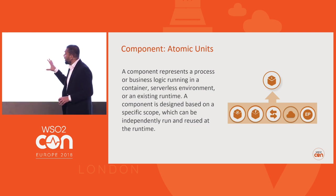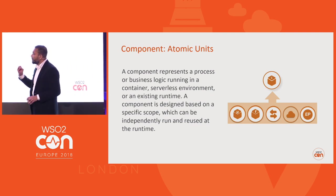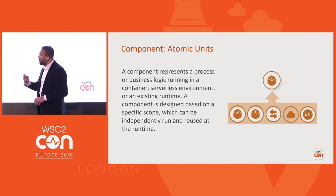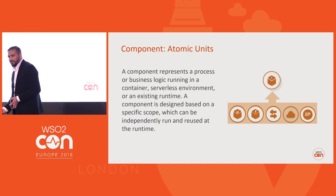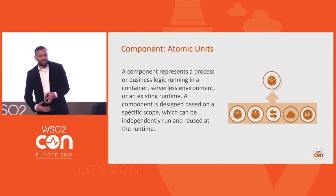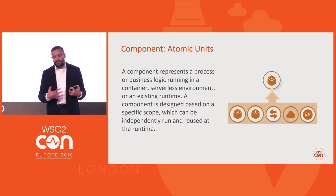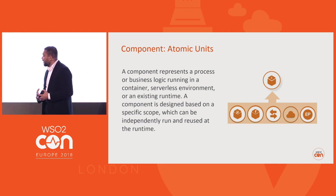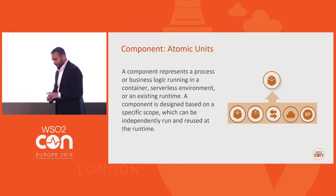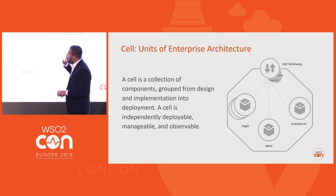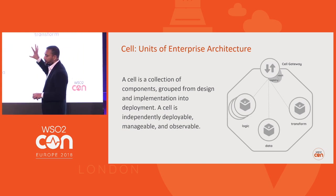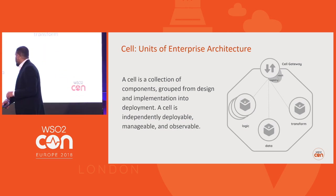Let's dig into the architecture pattern. The atomic unit of this architecture is called a component. A component can be anything — a service, a microservice, a function, a database, a gateway, whatever runtime you have running in a data center or cloud infrastructure. The collection of these components is called a cell. If you look at it, a cell has a gateway and n number of components inside. In many cases the relationship is one-to-many, though one-to-one is also possible.